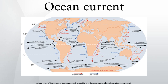Ocean basins generally have a non-symmetric surface current, in that the eastern equatorward-flowing branch is broad and diffuse, whereas the western poleward-flowing branch is very narrow. These western boundary currents are a consequence of the rotation of the Earth.